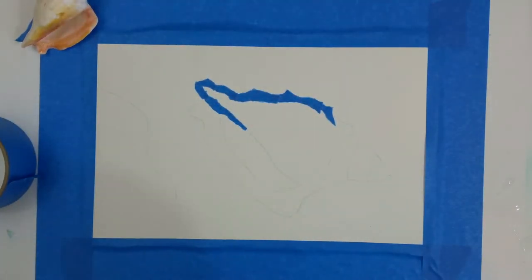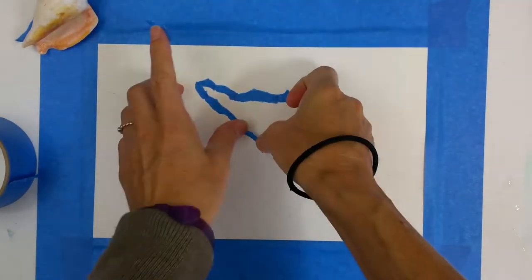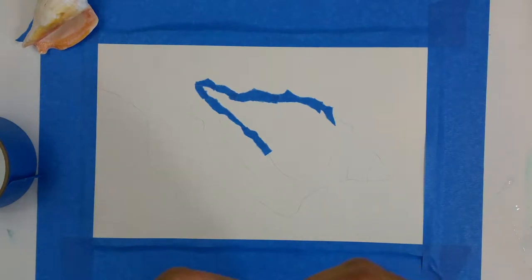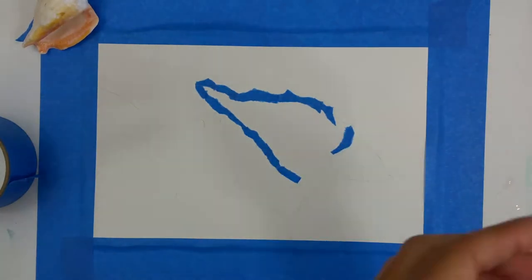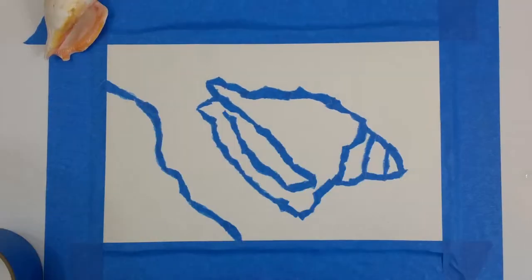Now, wherever I paint later, where the masking tape is, is going to stay white. So this is one way of leaving white when you paint with watercolor. Because unlike other paints, you can't add the white later.